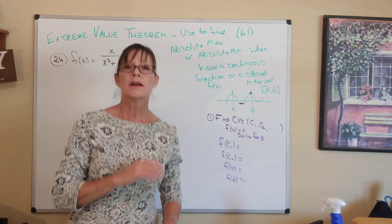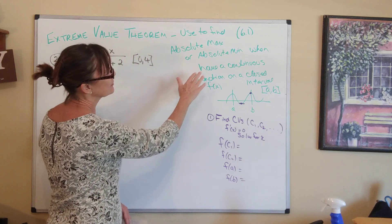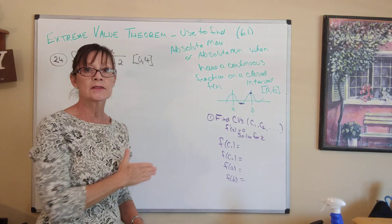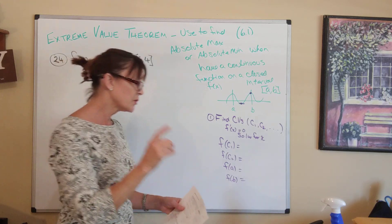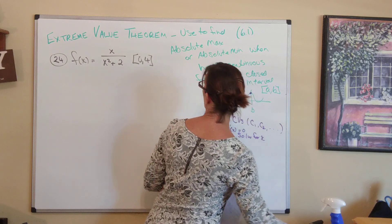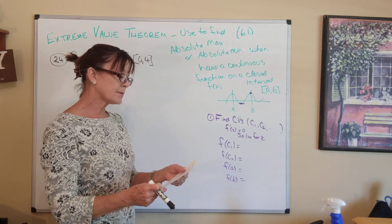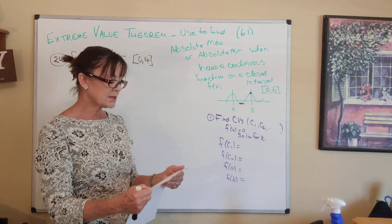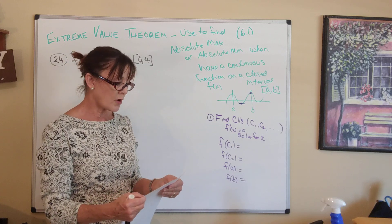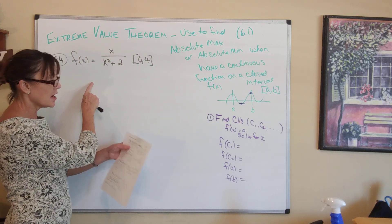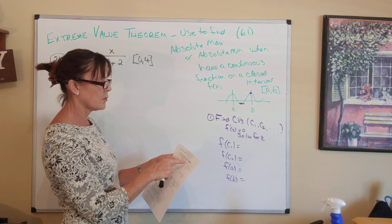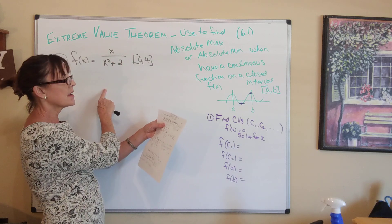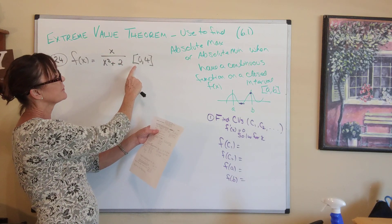On your upcoming test, I'm going to use the words 'find the absolute max and the absolute min using the extreme value theorem.' The first one on your worksheet says to find the absolute extrema — which means the absolute max and the absolute min — if they exist and where they occur. The function is f(x) = x / (x² + 2) on the closed interval from 0 to 4.